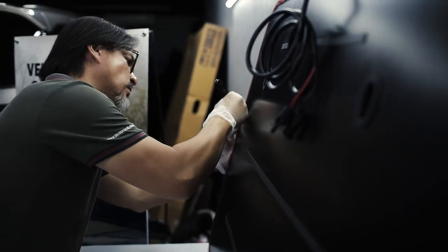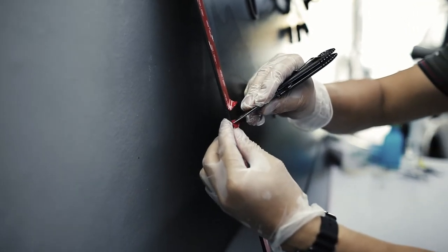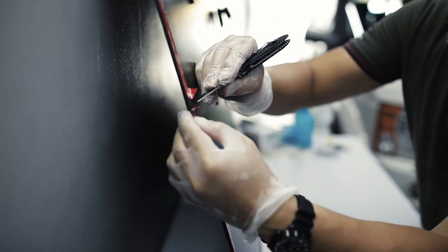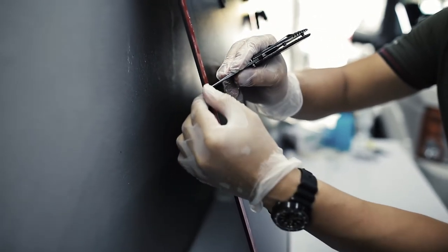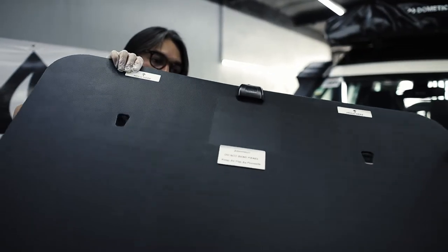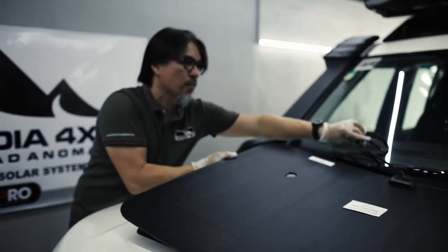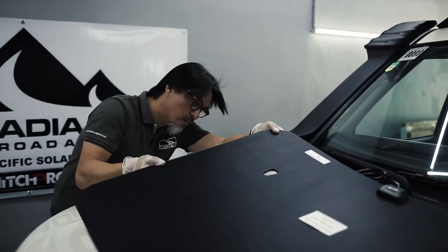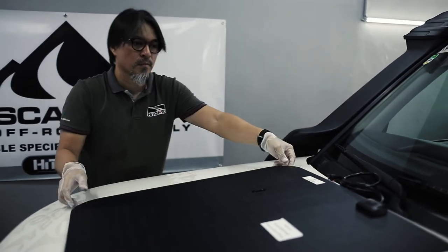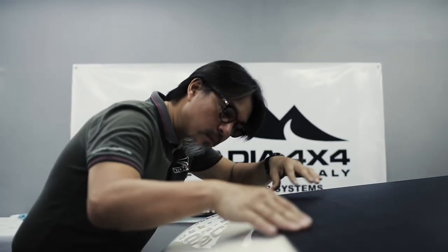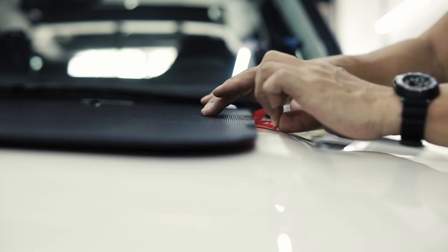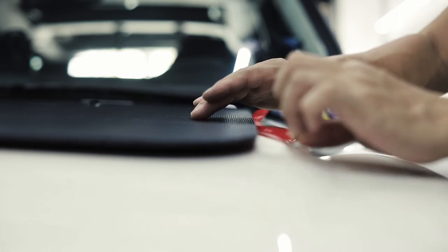Start peeling off the 3M tape, but just on the starting and ending portions. It will be easier to peel once it's on the hood. With another set of hands, place the main solar panel on the hood using the wiper washer as reference and the masking tape we placed earlier. Once everything is centered and flat, start peeling off the double-sided tape.